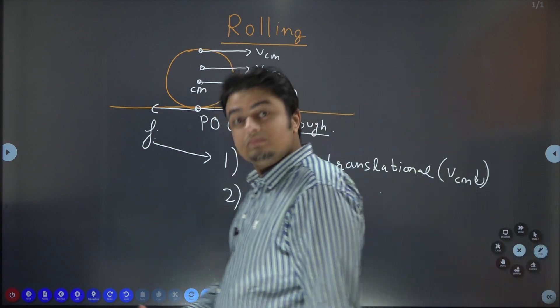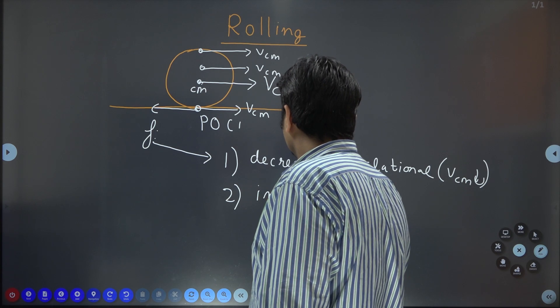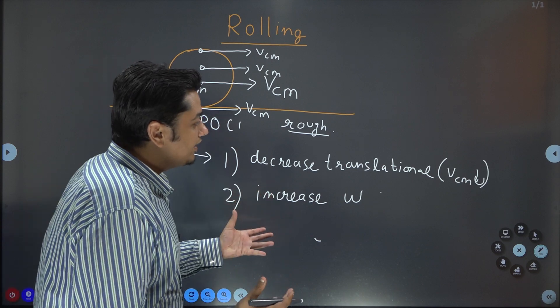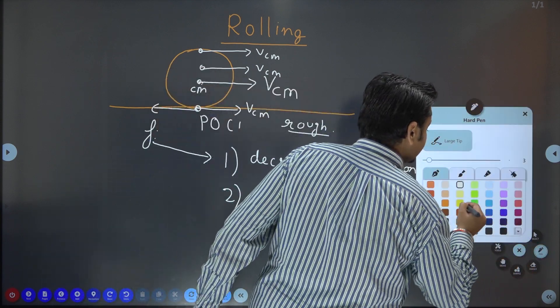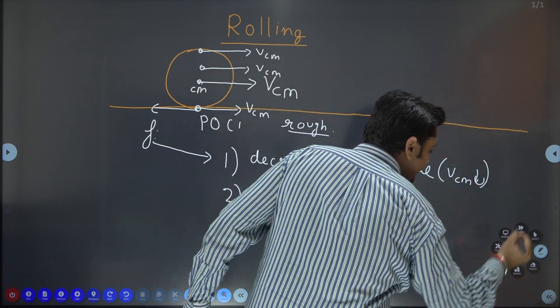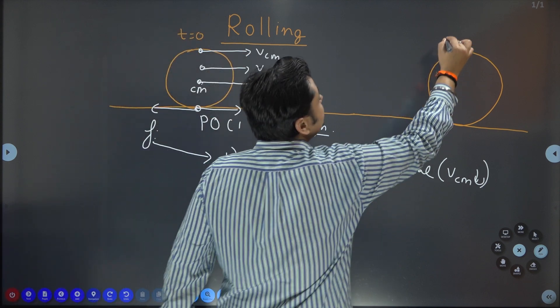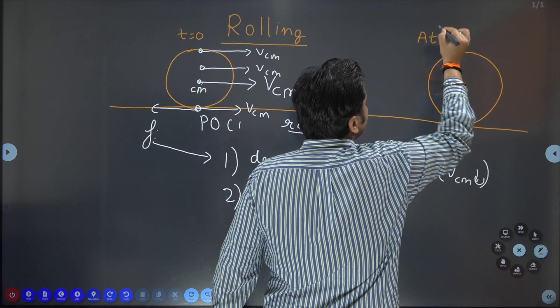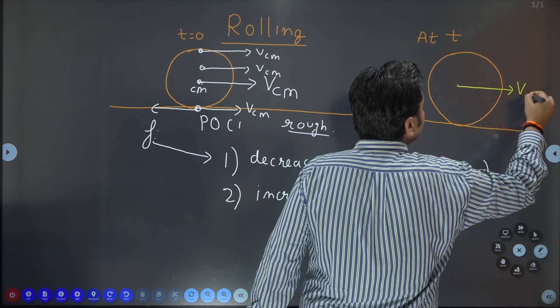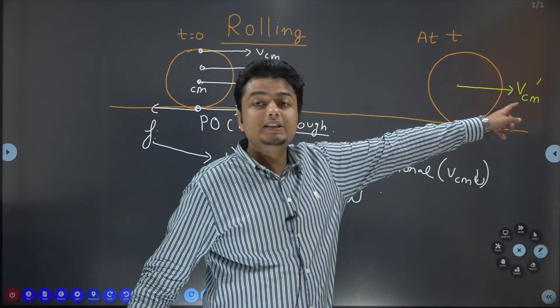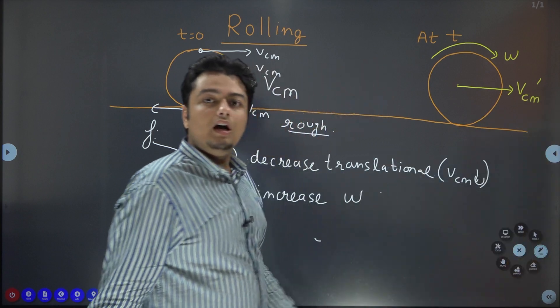What this clockwise torque will do? It will increase the rotational speed of this object. So, it will increase omega. Gradually VCM is decreasing, omega is increasing. Let us take a situation at which we arrive to a conclusion where this was t equals 0 and this is some time t after few minutes or seconds. It will have, the center of mass will have some speed which is VCM dash and definitely VCM dash will be lesser than VCM. Also this object has gained an angular speed omega.